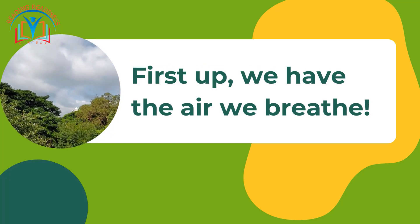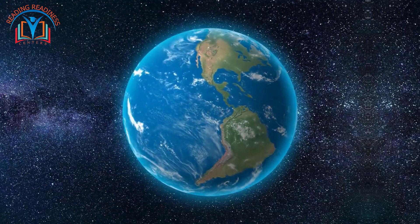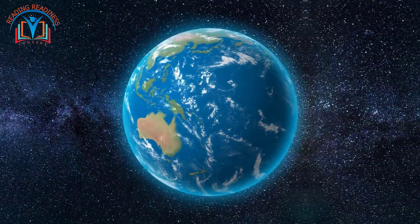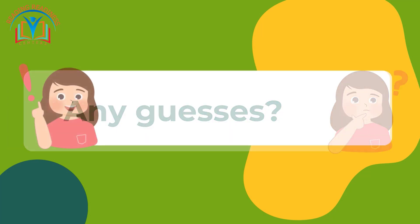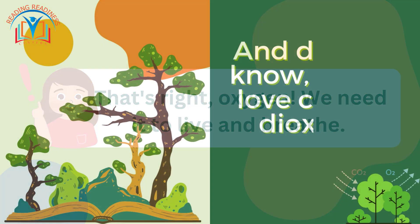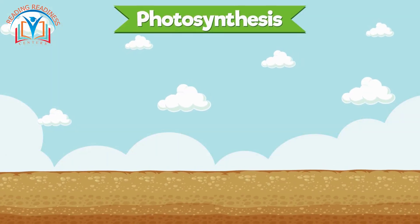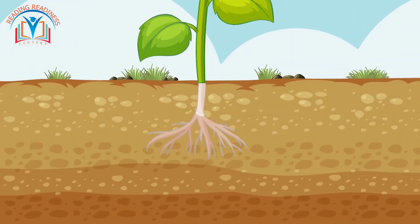First up, we have the air we breathe. It's like a giant invisible blanket covering our planet, and it's full of something super important — oxygen! We need it to live and breathe. Did you know plants love carbon dioxide? They take it in and give us back oxygen during a magical process called photosynthesis.